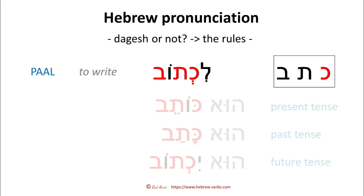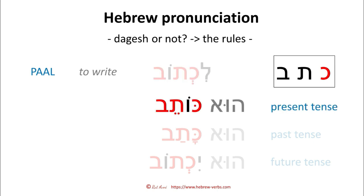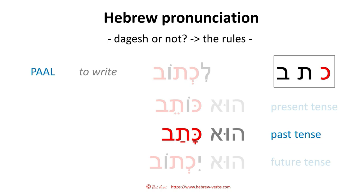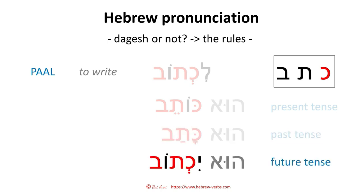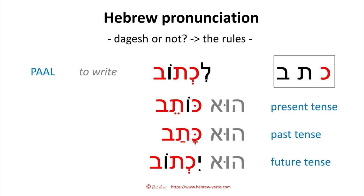To bring this to an end — Paal and the first root position, let's see how it plays out through the conjugation. 'Lichtov' — no dagesh in the infinitive. Present tense: 'hu kotev'. Past tense: 'hu katav'. Future tense: 'hu yikhtov'. Summary: there is no dagesh in the infinitive and the future tense, but there is a dagesh in the present tense and the past tense when we talk about the first root position.